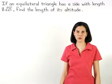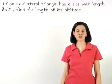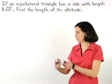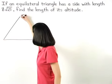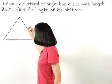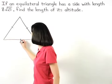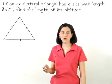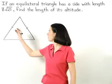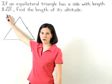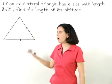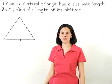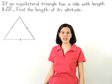Let's start this problem by drawing a picture of our equilateral triangle. We're given that one side of the triangle has a length of 8 root 21, and since it's an equilateral triangle, all three sides are congruent. So all three sides must have a length of 8 root 21.